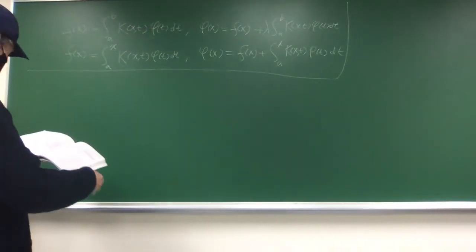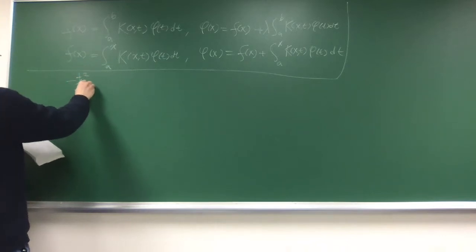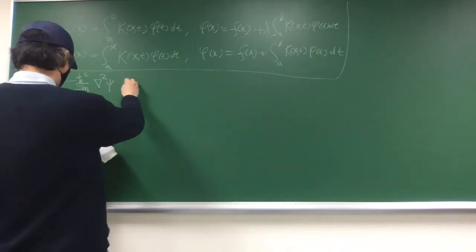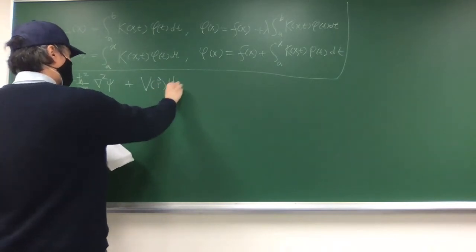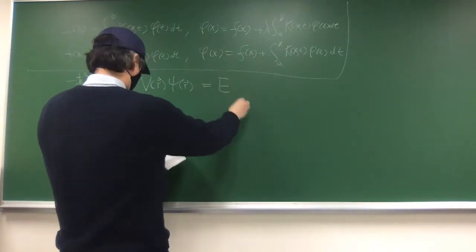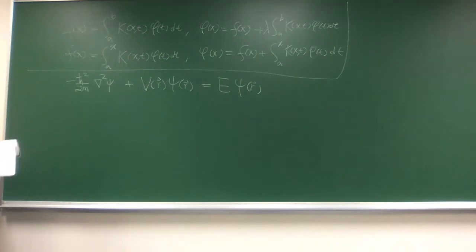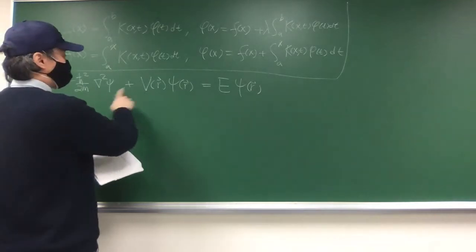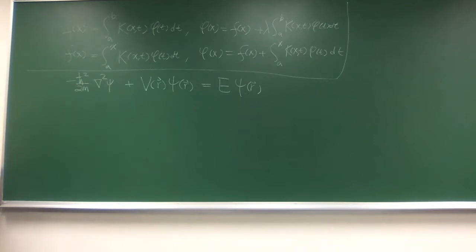The first example is the Schrödinger equation — mathematically just a Laplacian with some constants, plus a potential term V as a function, equaling an eigenvalue times psi. You want to solve for psi. This is homogeneous because psi appears in all terms, and E is basically an eigenvalue. It's linear, so it's solvable as a differential equation, and you'd most likely try to solve it in a different way.